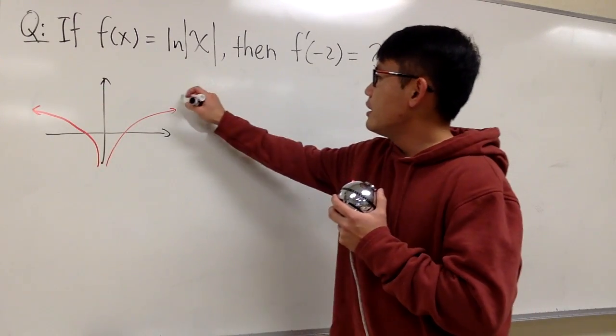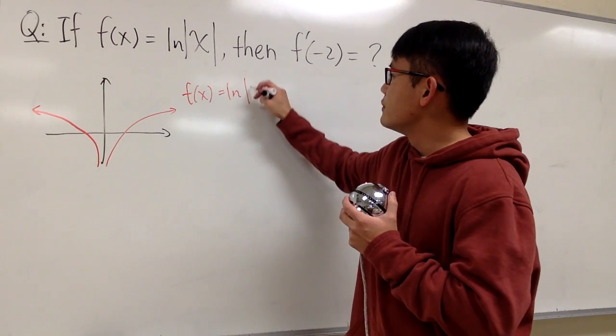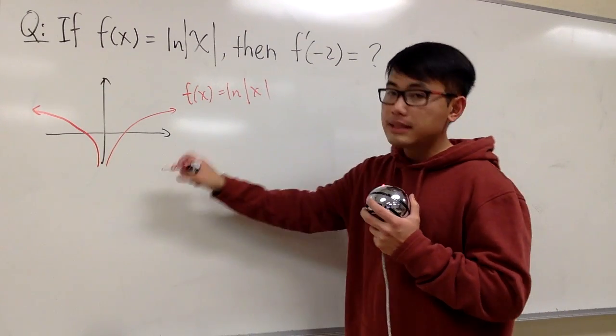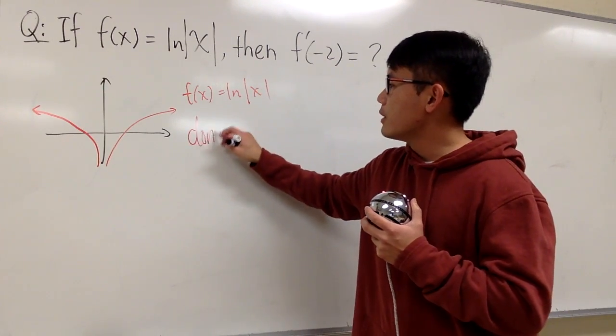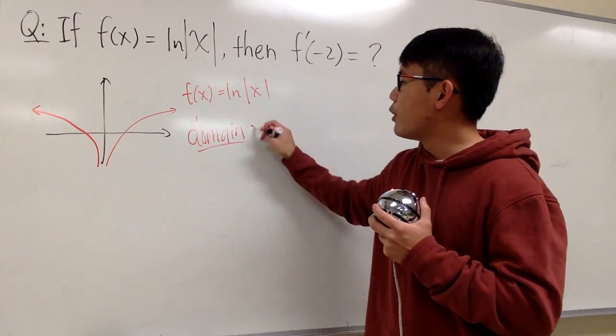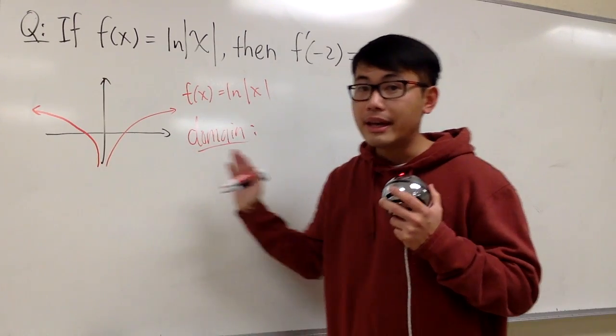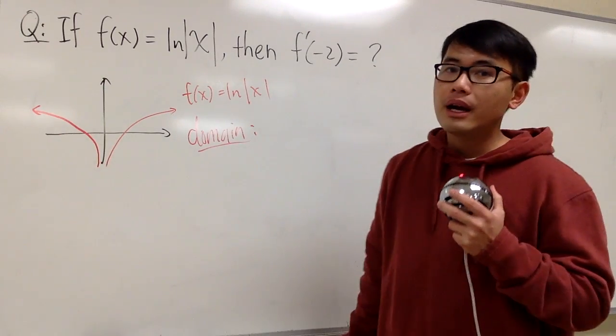So, here, if the function is ln absolute value of x, in this case, the domain, once again, we can have both positive numbers, and this time, we can also have negative numbers.